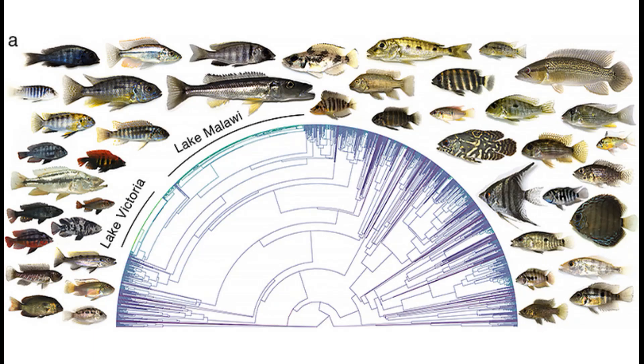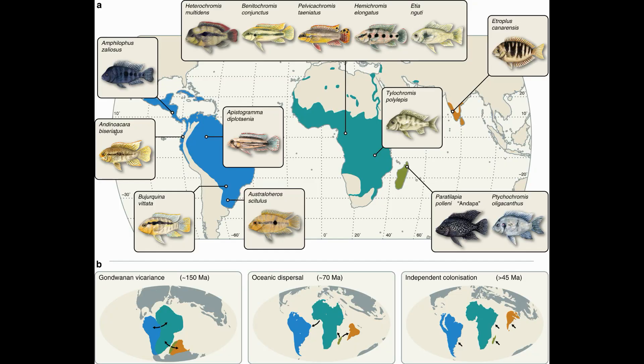Cichlidae is one of the most speciose families of vertebrates, containing at least 1,600 freshwater species that range from South America and a few Caribbean islands to Africa to Madagascar to India and Iran. On the basis of this distribution, many researchers have argued that Cichlidae existed prior to the breakup of Gondwana, and as the continents drifted apart, they carried their local cichlid populations with them.